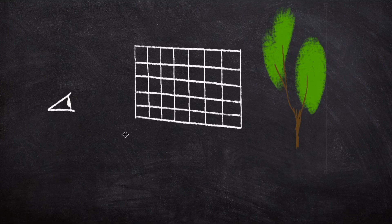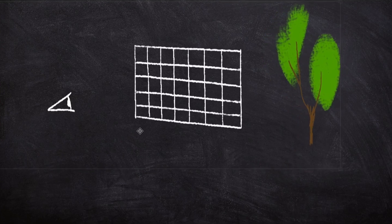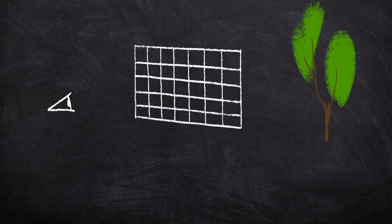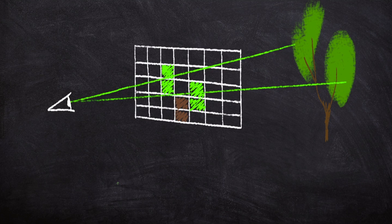Now if we move the eye back to where it was, and this time we move the tree away from the window, what happens is the light rays that pass through the window now pass through at a lower angle. This makes the tree appear smaller in the window, and this is why objects that are further away look smaller than objects that are close up.